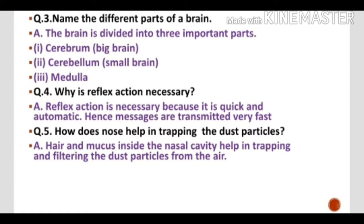Question No. 3: Name the different parts of the brain. Children, the brain is divided into 3 parts: cerebrum, which is also called the big brain; cerebellum, which is called the small brain; and medulla, which is the third part.